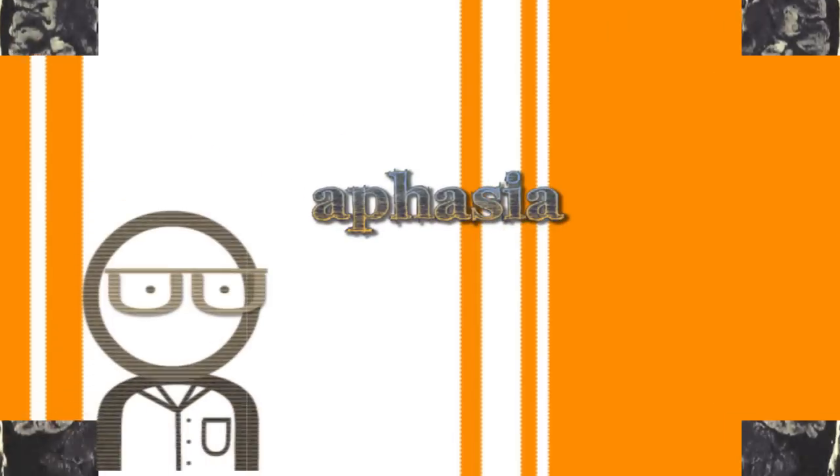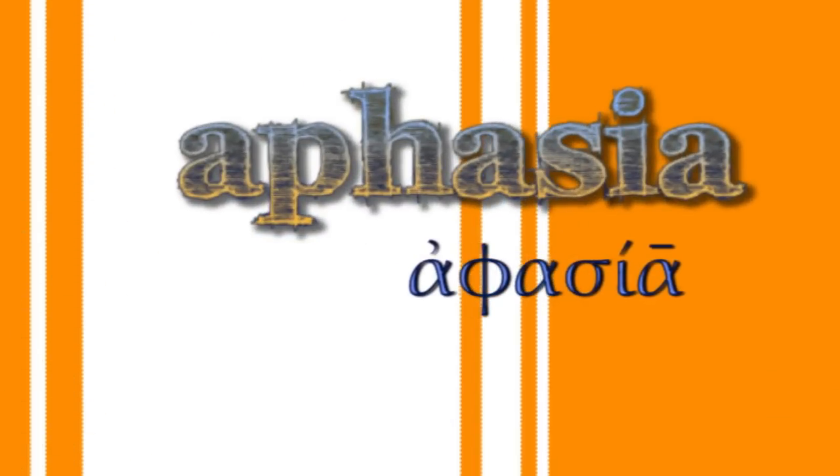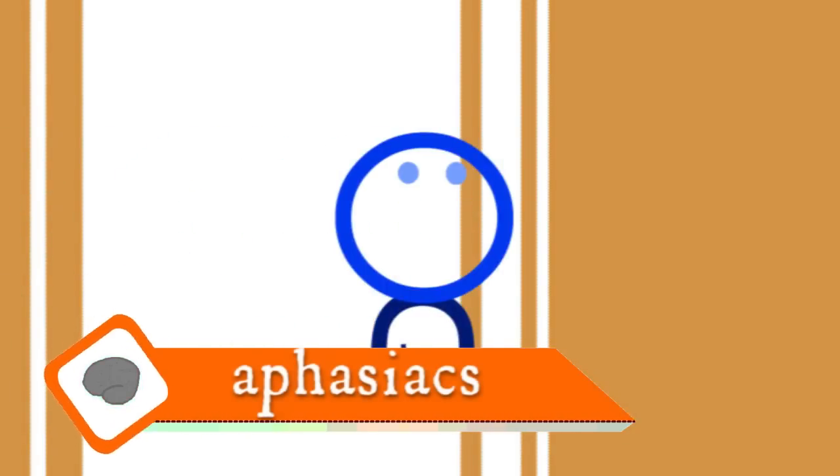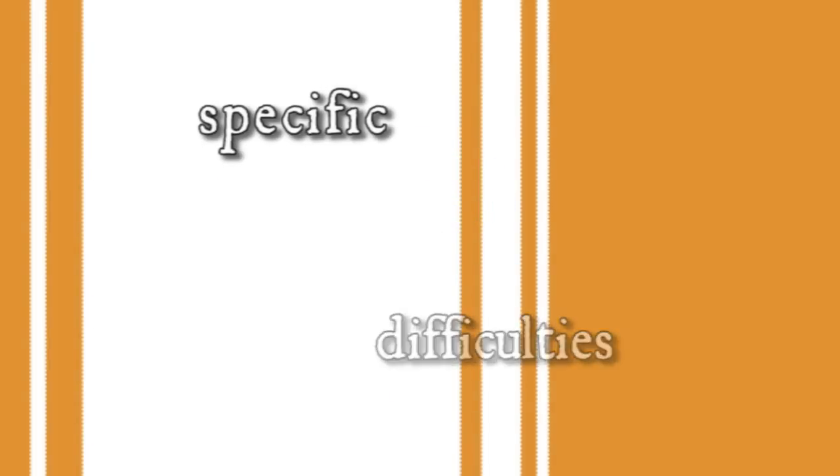The ancient Greek word aphasia simply means speechlessness. Patients suffering from aphasia have head injuries that disrupt their abilities to understand or produce speech. It turns out that specific linguistic difficulties were associated with lesions in specific parts of the cortex.